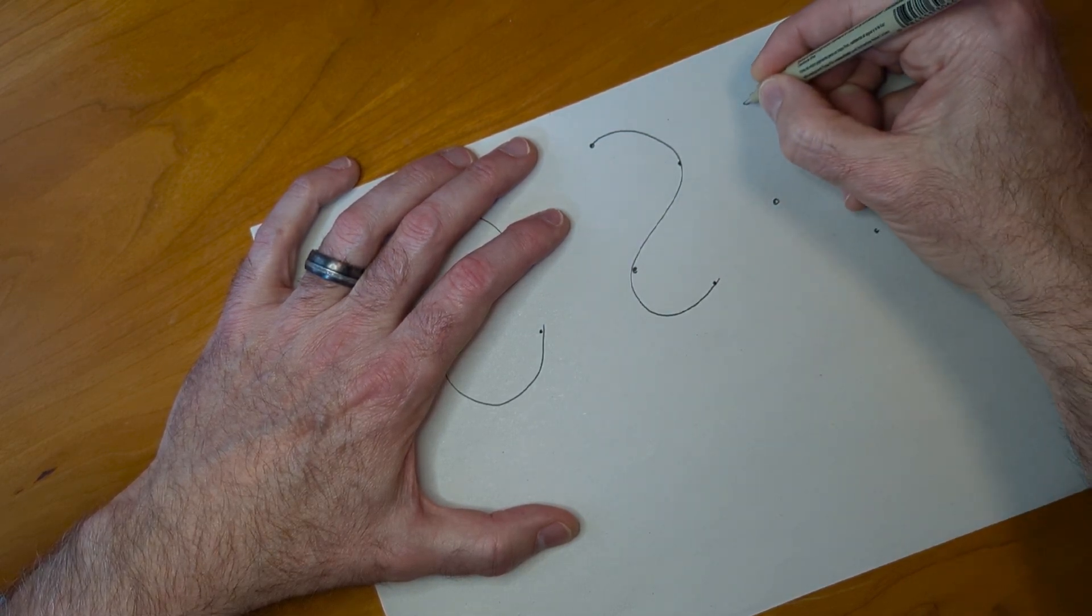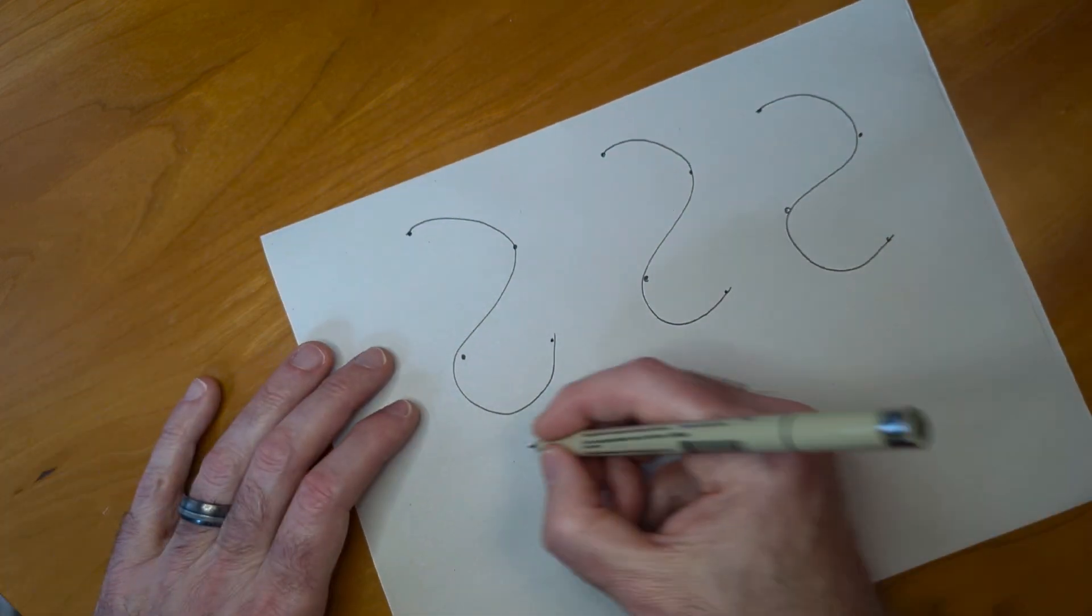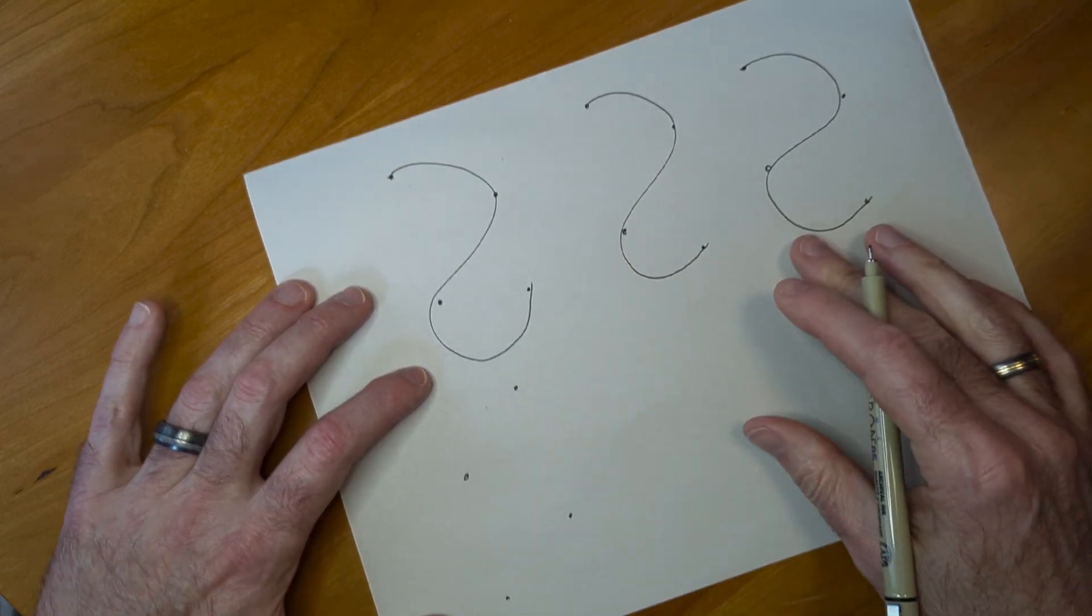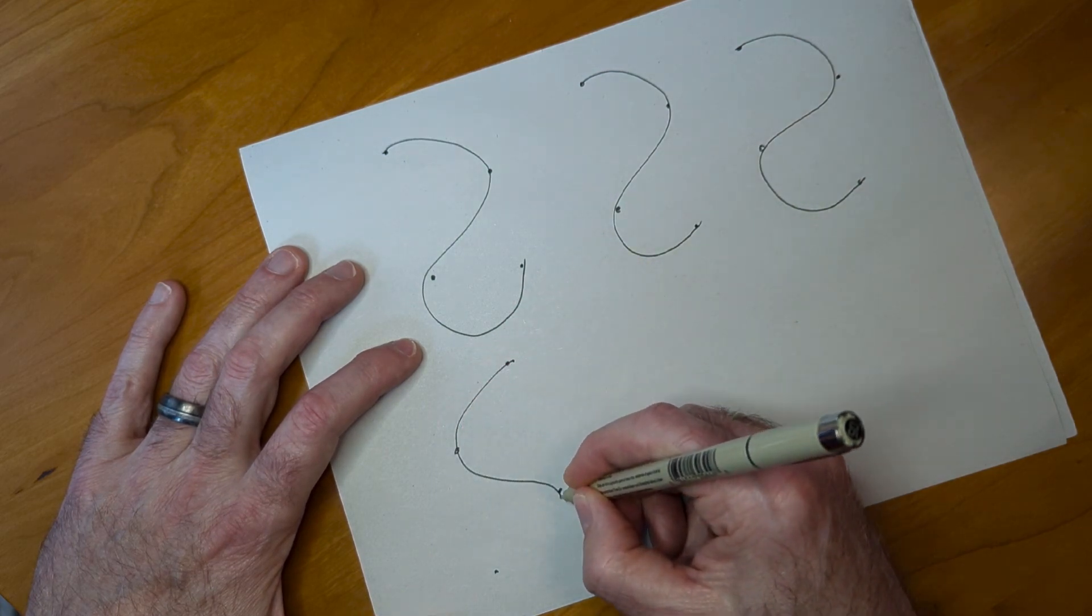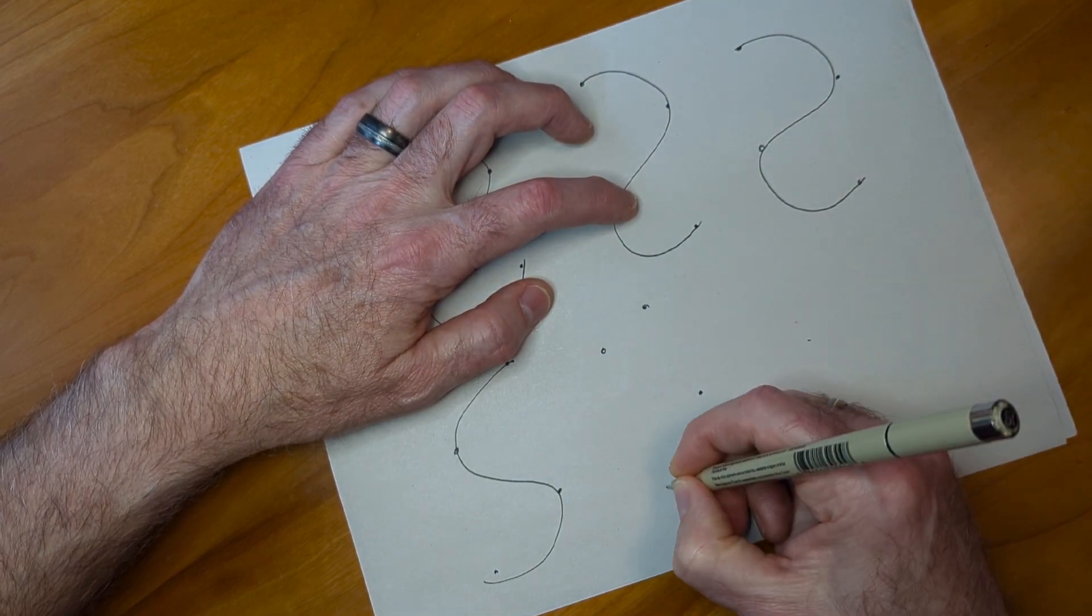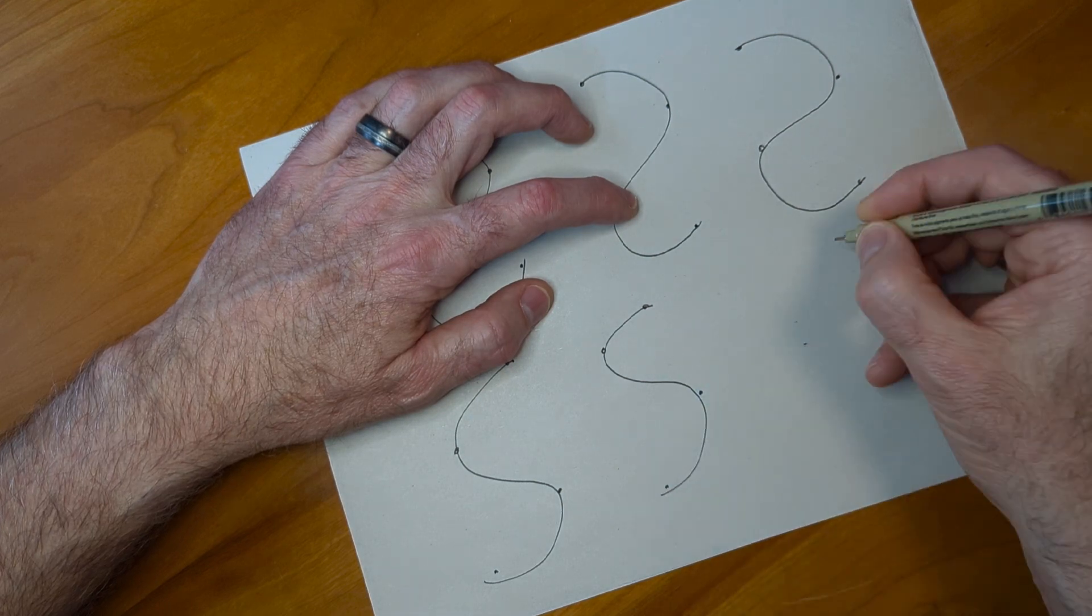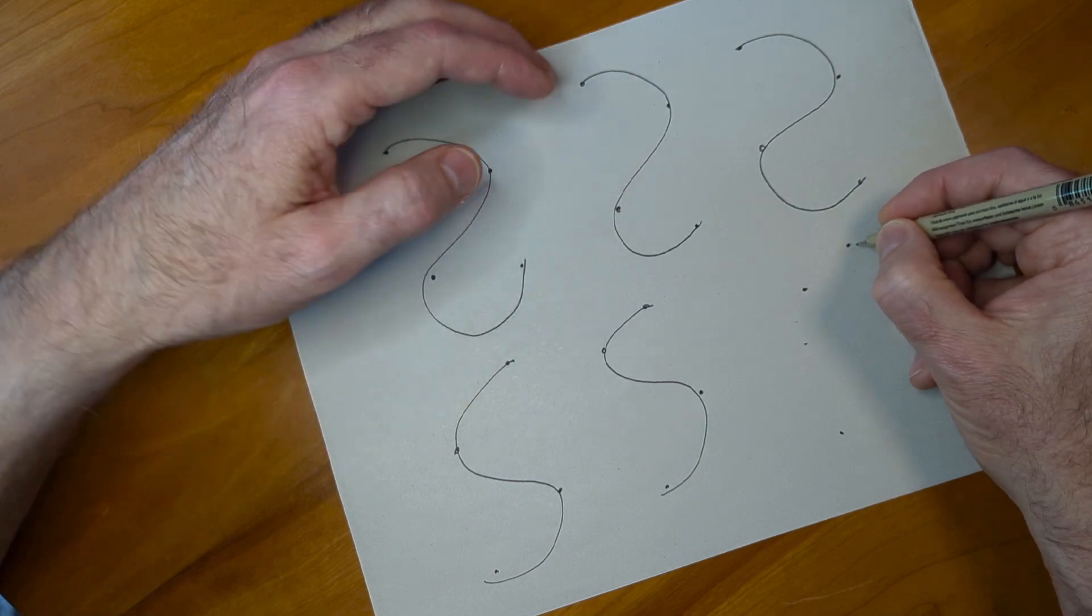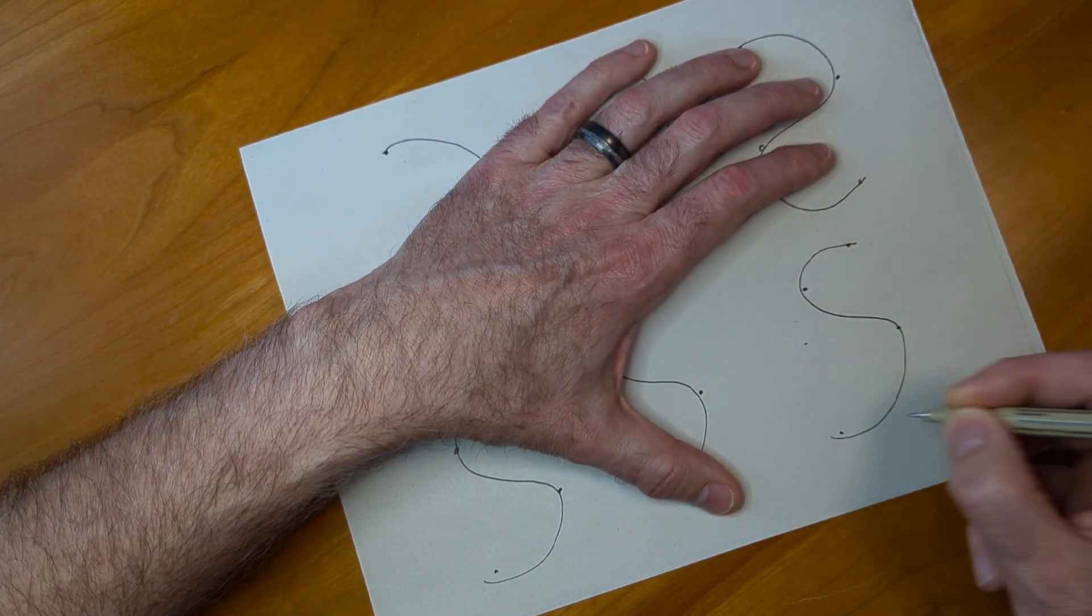I'm just going to go ahead and do six of them. One going one or three going one way, three going the other. Four dots, drawing an S, trying to hit each one of them.